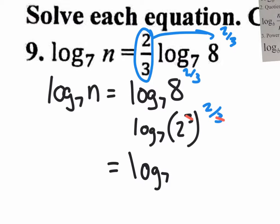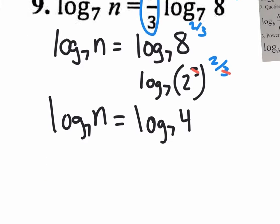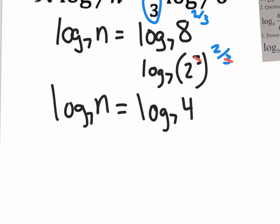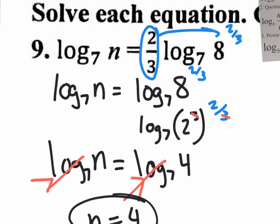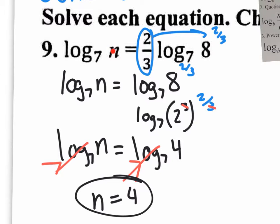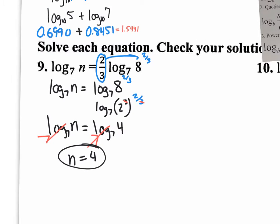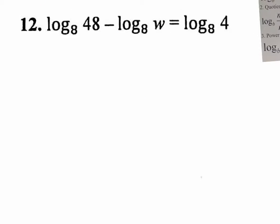So the right side becomes log base 7 of 4, and the left side is log base 7 of n. Now both sides are a single log base 7, so we raise both sides to the power of base 7 — the logs cancel out — and we get n = 4. The only remaining detail is to check that plugging in 4 doesn't give a negative value inside any logarithm. Log base 7 of 4 is fine, so it's not an extraneous solution.